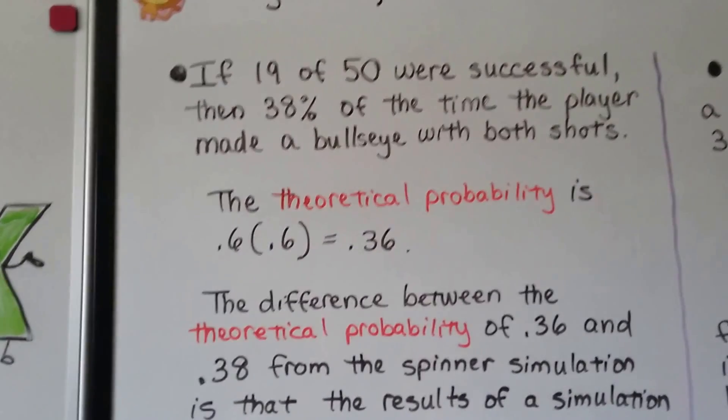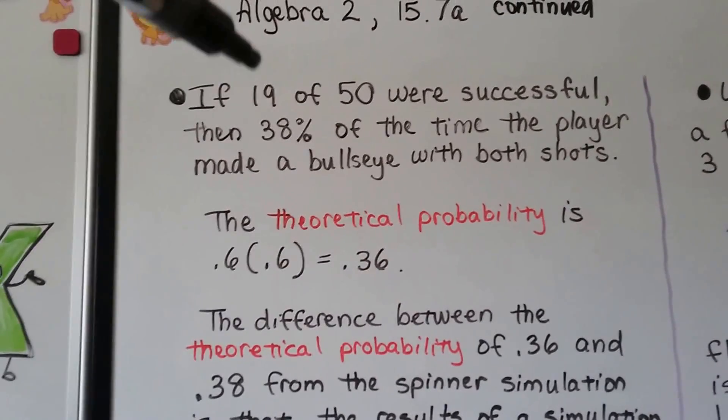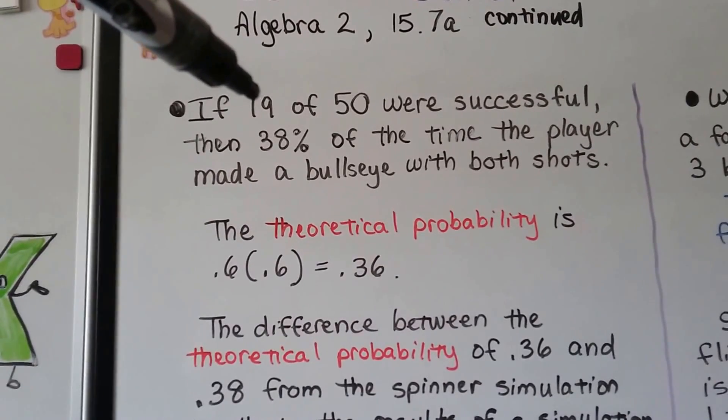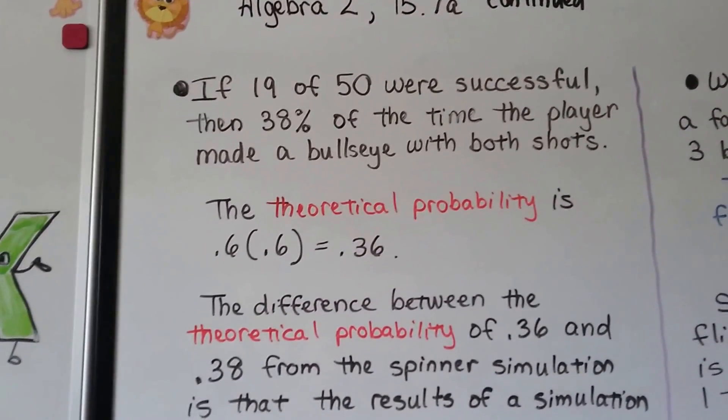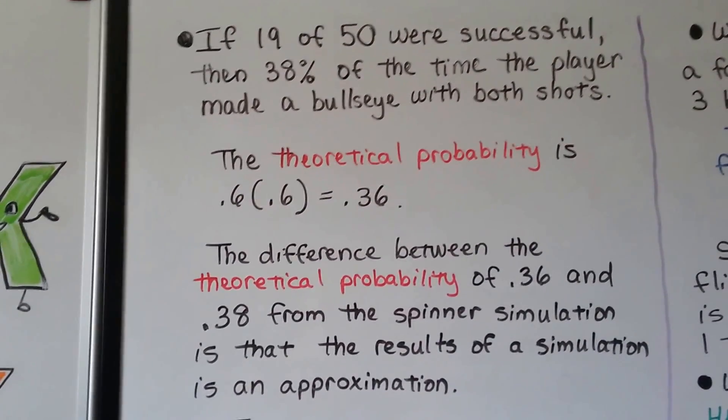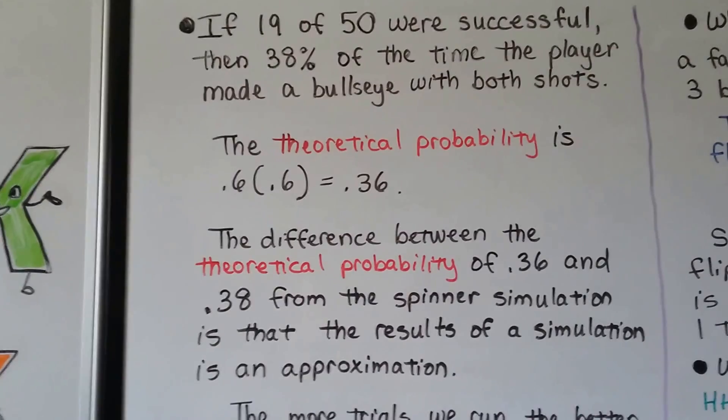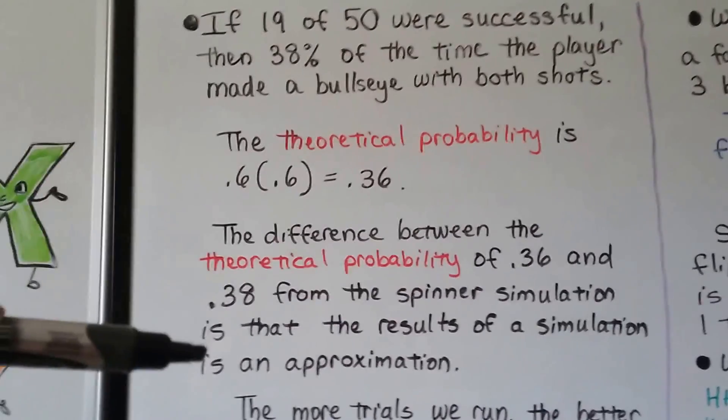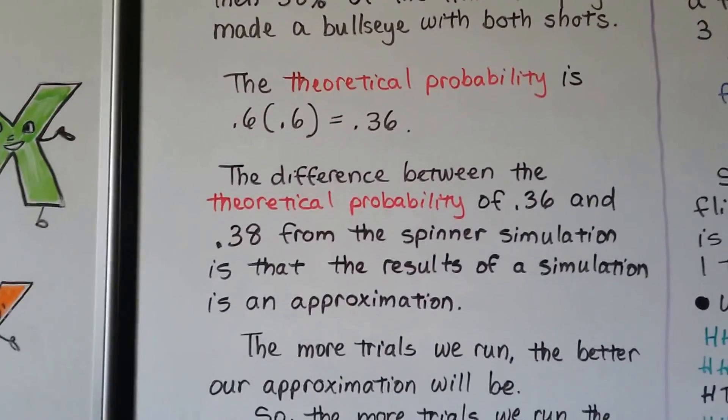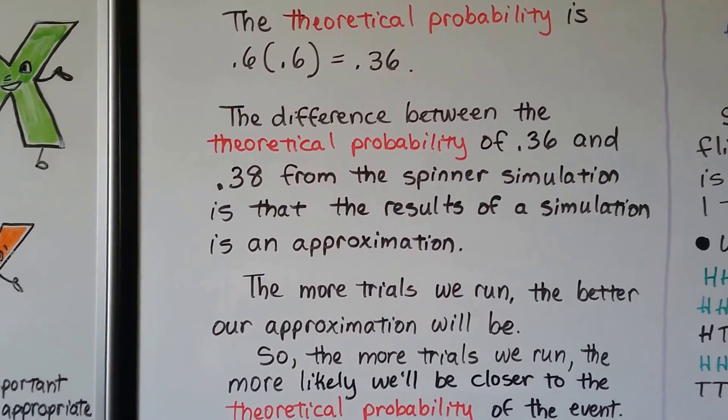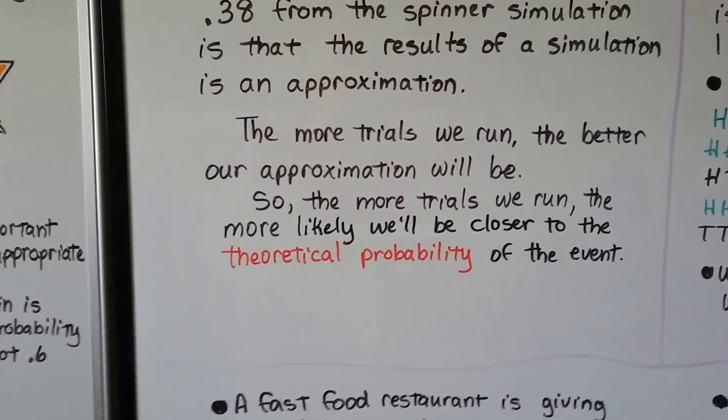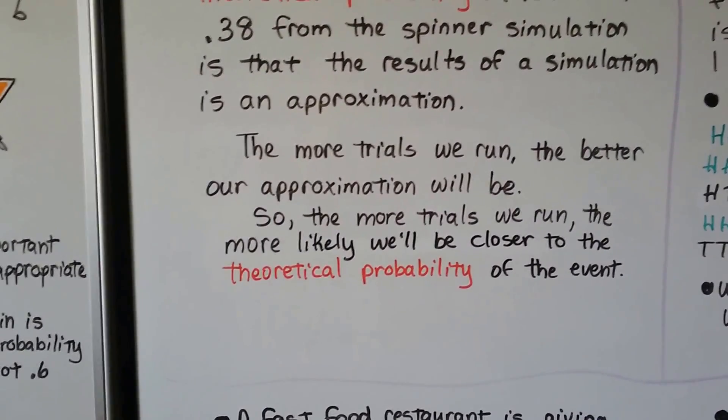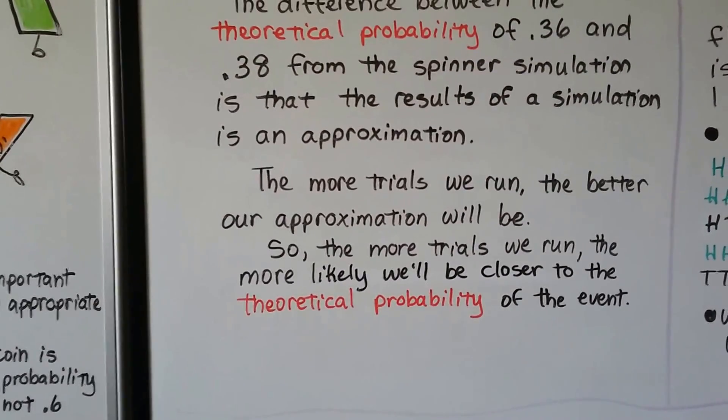If 19 out of 50 were successful, then 38% of the time, the player made a bullseye with both shots. This would be 19 times 2 is 38, and 50 times 2 is 100, so that's 38 one-hundredths. That's how we got the 38%. The theoretical probability is .6 times .6. It equals .36. The difference between the theoretical probability of .36 and .38, what we got from spinning our spinners, from that spinner simulation, is the result of a simulation. It's an approximation. So this .38 is just an approximation. The more trials we run, the better our approximation will be. The more trials we run, the more likely we'll be closer to the theoretical probability of the event. We'll be closer to the .36.